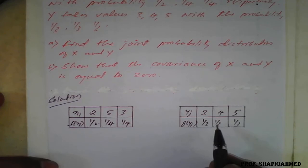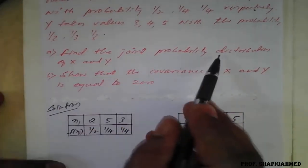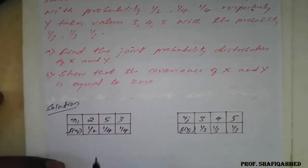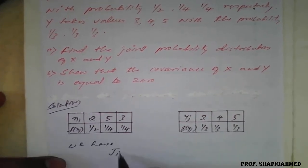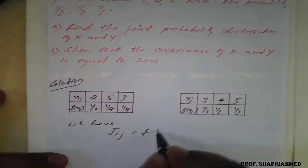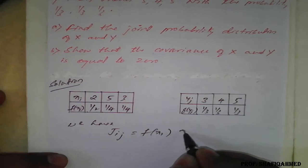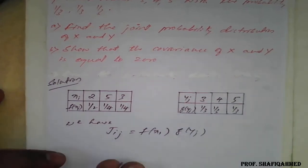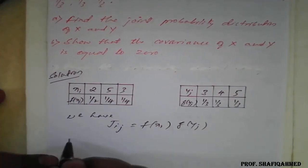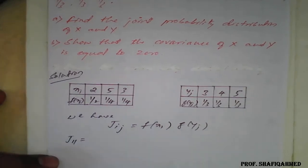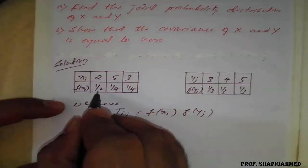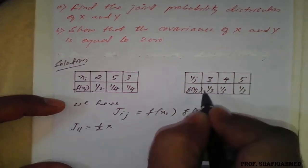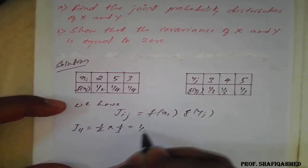With the help of this, for the first part — find the joint probability distribution of X and Y — we know that J(i,j) = F(X_i) × G(Y_j). For example, J(1,1), that is first row, first column: we take 1/2 × 1/3 = 1/6.